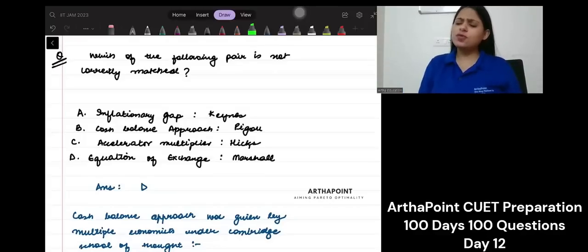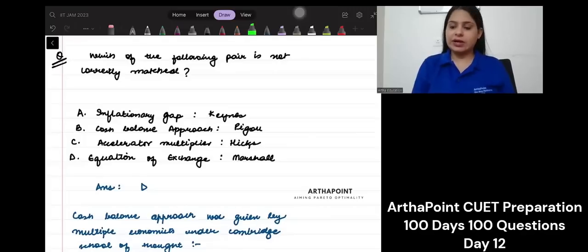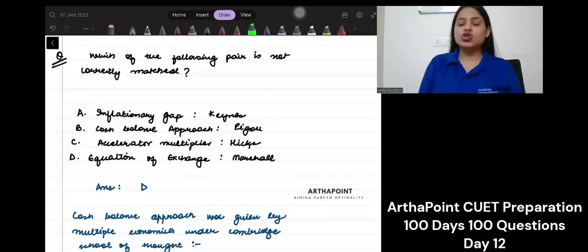So, which of the following pair is not correctly matched? Inflationary gap, cash balance approach, accelerator multiplier, and equation of exchange.